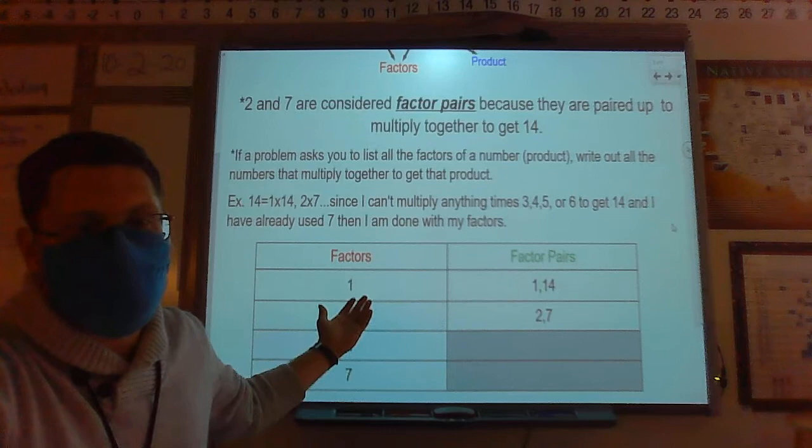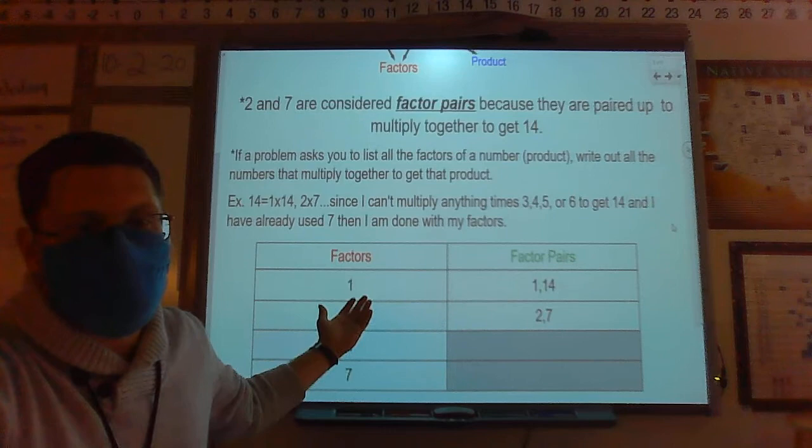And how I like to do it is I like to break them apart with factors and factor pairs on the other side. So all my factors would be 1, 14, 2, 7. All my factor pairs would be 1 and 14 and 2 and 7.